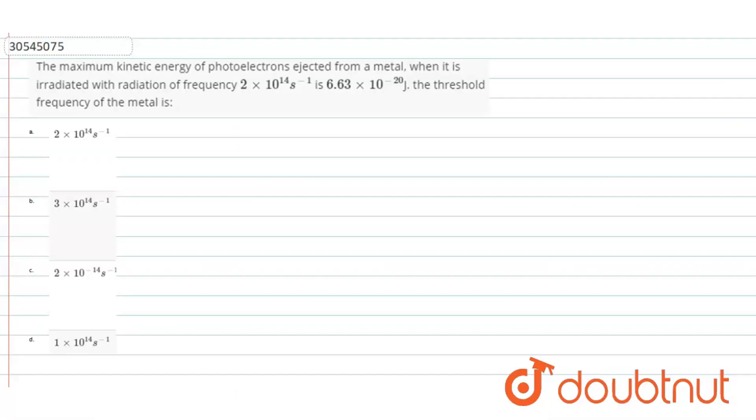So the question is, the maximum kinetic energy of photoelectrons ejected from a metal when it is irradiated with radiation of frequency 2 into 10 to power 14 per second is 6.3 into 10 to power minus 20 joules. The threshold frequency of the metal is...